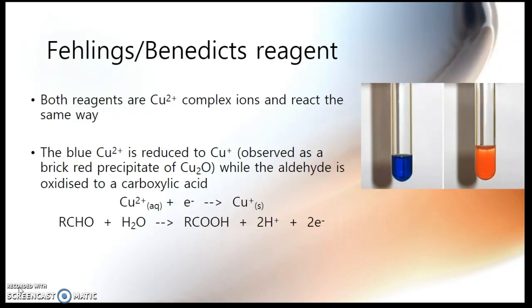When you add the Fehlings or Benedict's reagent to an aldehyde and again heat it, if in doubt heat, what you see is the blue copper colour turning into a red colour, orangey red. Sometimes it's described as brick red, sometimes orangey red. In reality, you can even get greenish colours sometimes. But stick with brick red, it's the standard answer.